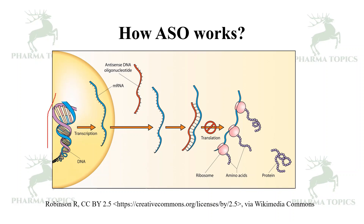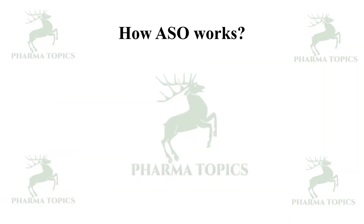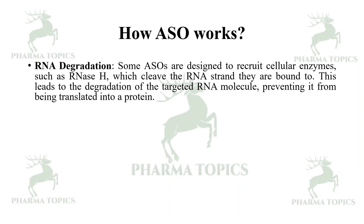How do antisense oligonucleotides work? From the diagram: DNA is transcribed into mRNA, which is then translated into the required proteins by the cell. These may be faulty proteins that induce cancer or disease. Here comes the role of antisense DNA oligonucleotides — they base pair with the mRNA, forming a duplex that is digested by RNase H, making it unavailable for protein synthesis.